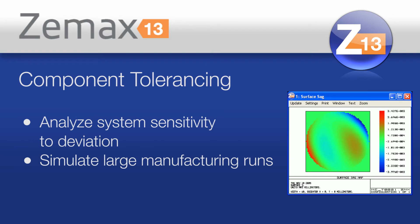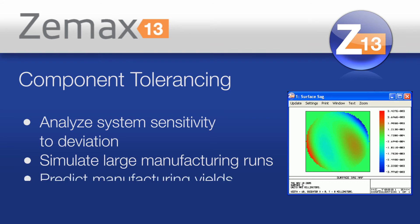There's always some variation in performance, and what's important is that you're confident you'll achieve the yields that you need, or that the one unit you make will meet the minimum specifications you require. And that's what the tolerancing feature gives you.